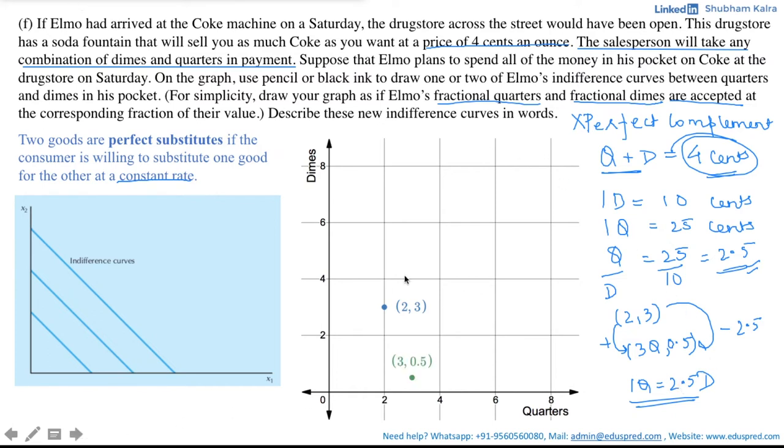Now, note that at both of these scenarios, that is whether he is at two quarters and three dimes or he is at three quarters and 0.5 dimes, he would be able to buy the same amount of soft drinks. And if that is the case, then his satisfaction level will be same. Thus, these two points will be lying on same indifference curve.